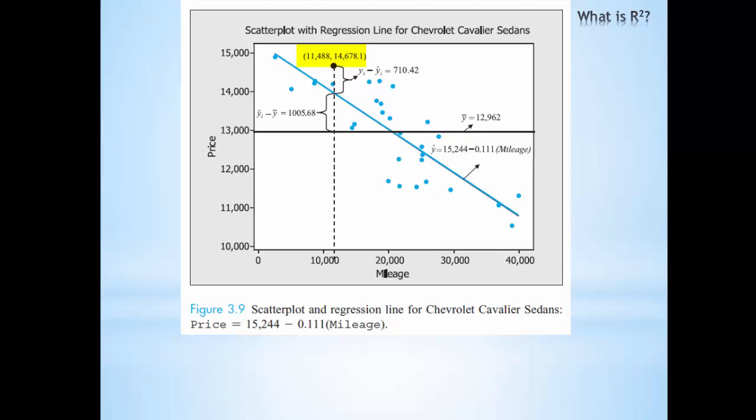We've highlighted one particular data point that has the x-value of 11,488 and a price of 14,678.1. This observed price for this particular car is our y_i value, our observed data point. We also have y-hat_i, which is our predicted value for this given mileage. So when we plug in 11,488 into our regression model, we get an expected value that falls right on the regression line. Finally, we also have a y-bar value. The average price of all the cars in this subset of data is 12,962.